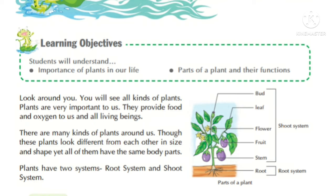There are many kinds of plants around us. Though these plants look different from each other in size and shape, yet all of them have the same body parts. Plants have two systems: root system and shoot system.